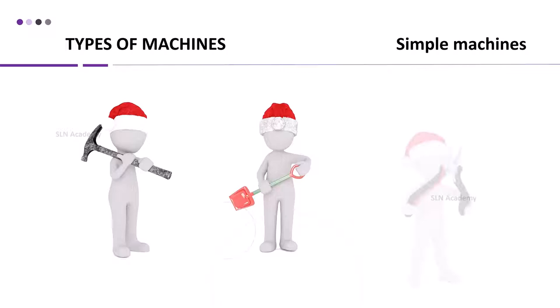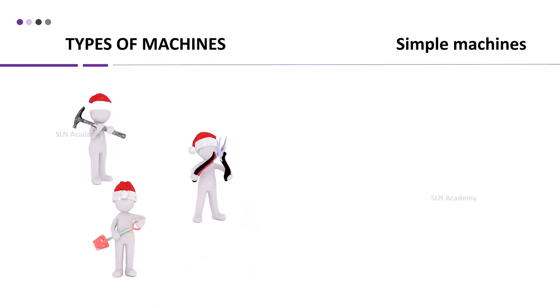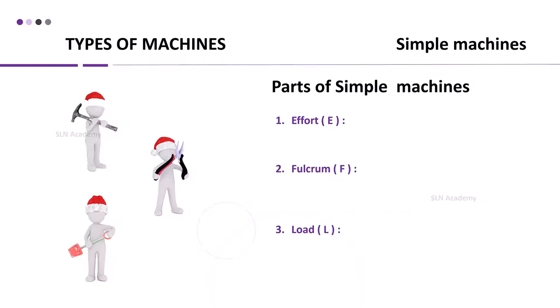Simple Machines. Machines which have very few parts and a simple structure are called simple machines. Simple machines have very few parts. They are effort, fulcrum, and load.